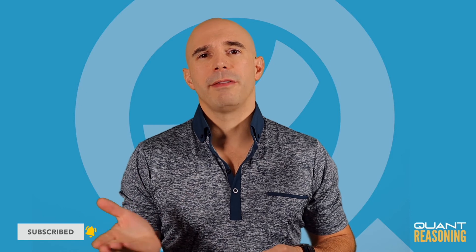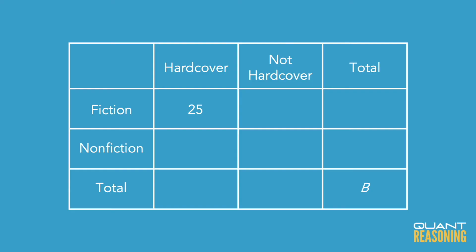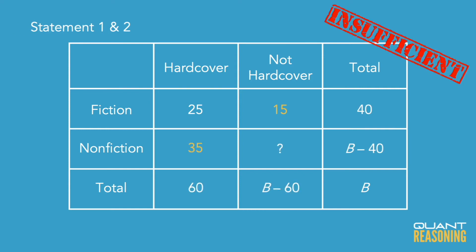Even if we combine these statements — we'd have the top row and the left column — we're stuck. There's still no way for us to find the value of B, and therefore the correct answer here is E.